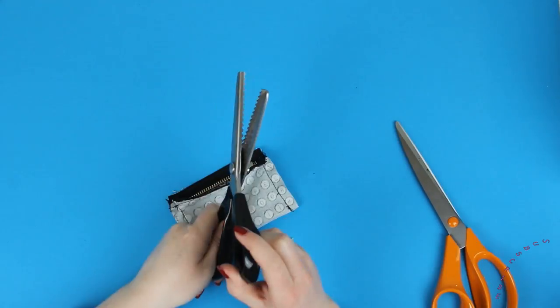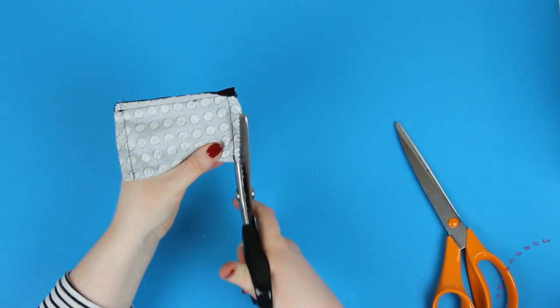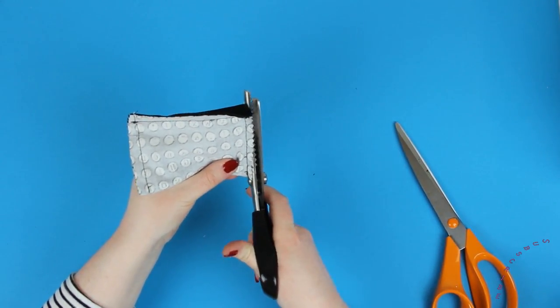This step is optional but I took my pinking shears and trimmed the side seams just to help reduce any fraying of the fabric.